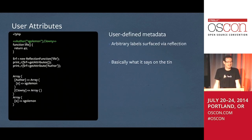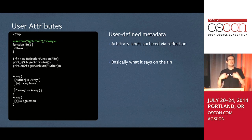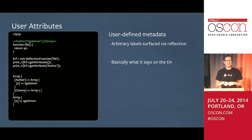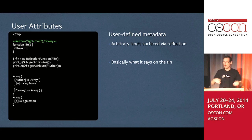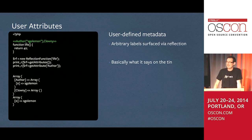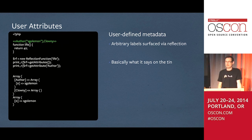A couple more things in Hack. We have user attributes: instead of structurally parsing data providers from comments like PHPUnit does, you can put anything you want in angle brackets in front of a function and use that via reflection. PHPUnit already supports user attributes for data providers.